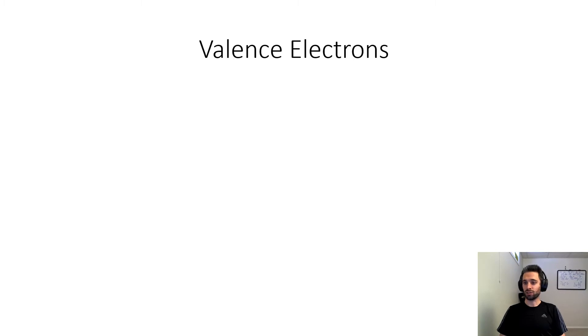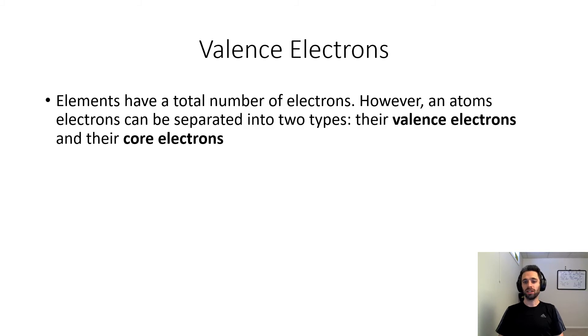And we get to valence electrons. Making this story a little bit more complicated, elements have a total number of electrons that we just talked about. However, an atom's electrons can be separated into two types: their valence electrons and their core electrons.